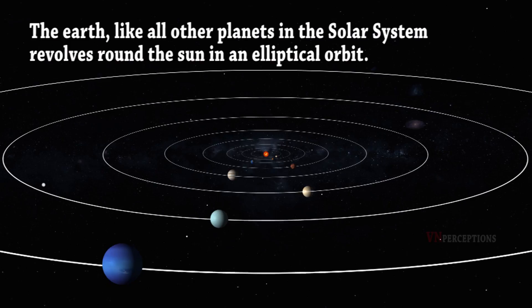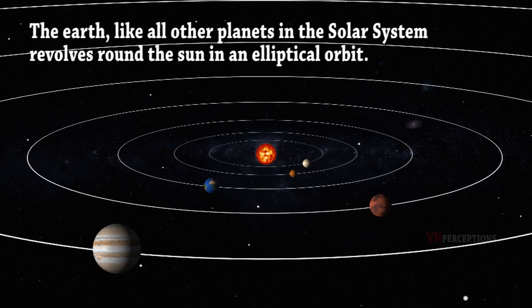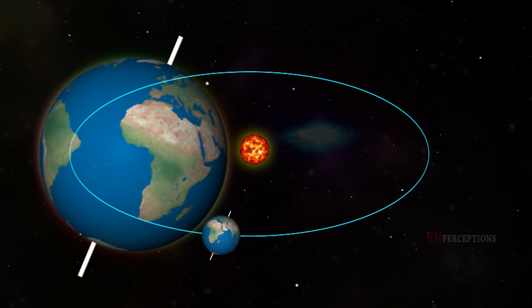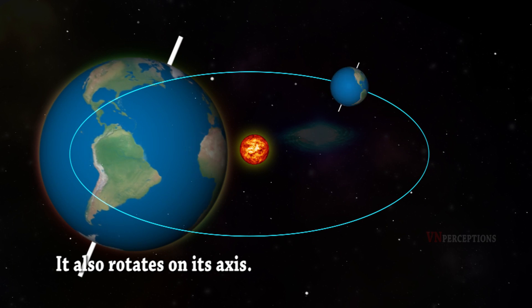The Earth, like all other planets in the Solar System, revolves around the Sun in an elliptical orbit and also rotates on its axis.